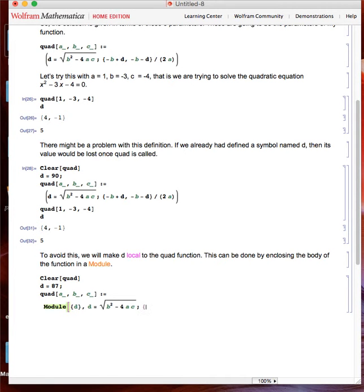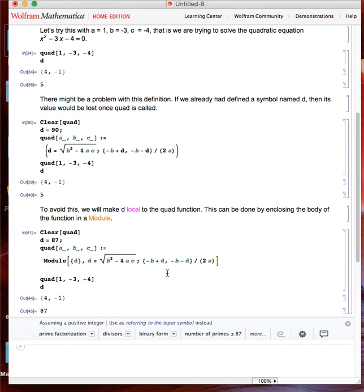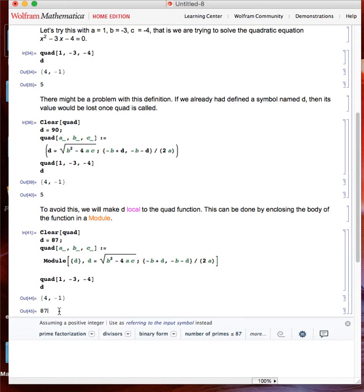And again, the solution in terms of a list. I'm closing the square brackets. Let's see: quad, 1, 3, 4. I'm asking again for d. As you can see, now the value which I gave to d before is not lost. It's not lost. We have 87.